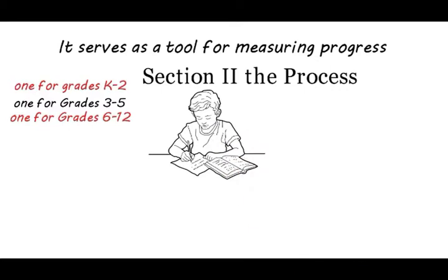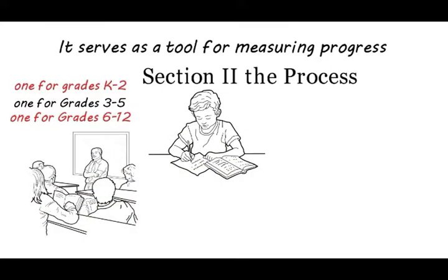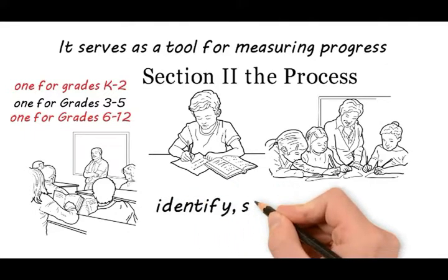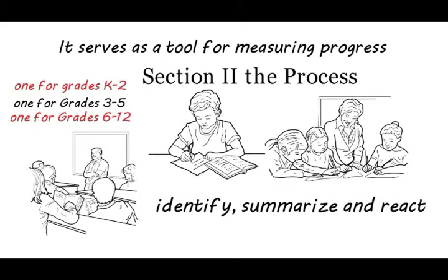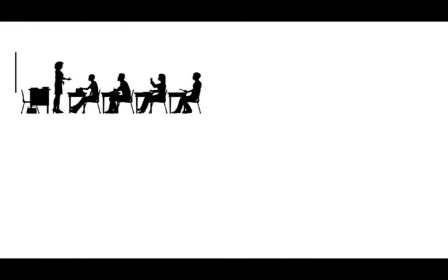Section 2: The Process. The Writing to Respond process entails three major elements that guide students on how to interact with information or literary text. They are identify, summarize, and react.